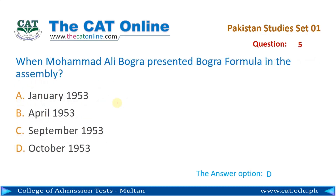Question number 5: When did Mohamed Ali Bogra present the Bogra formula in the assembly? Mohamed Ali Bogra نے assembly میں Bogra formula کب پیش کیا? The correct answer is D — October 1953.